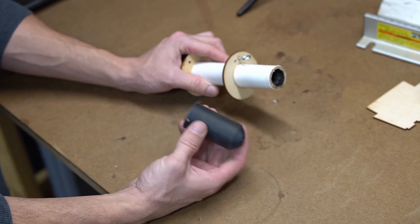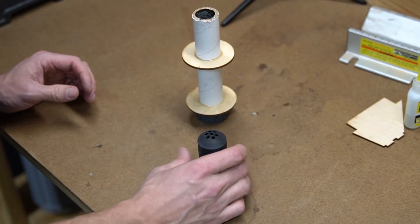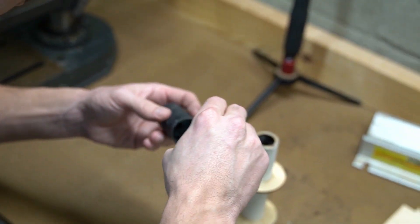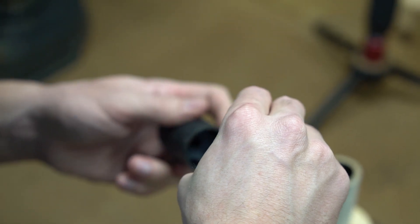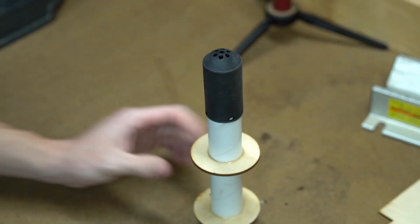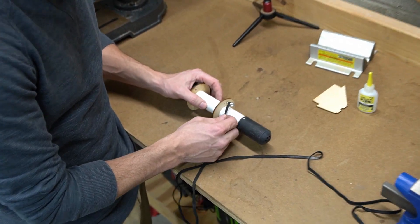Now we can glue on our ejection charge baffle here. Now we can tie on our shock cord.